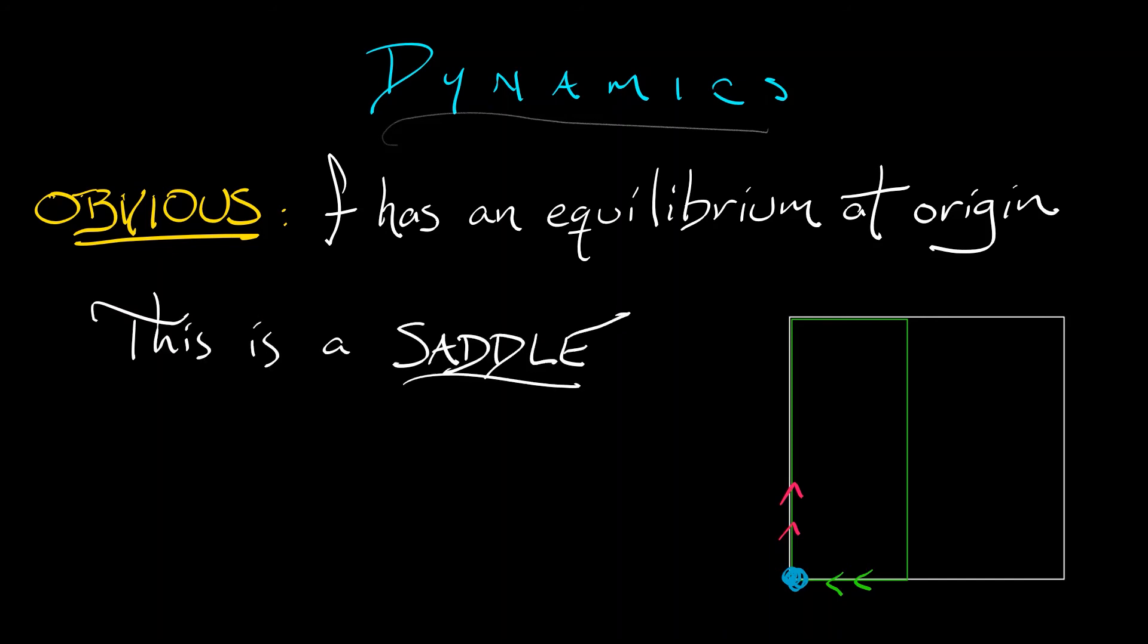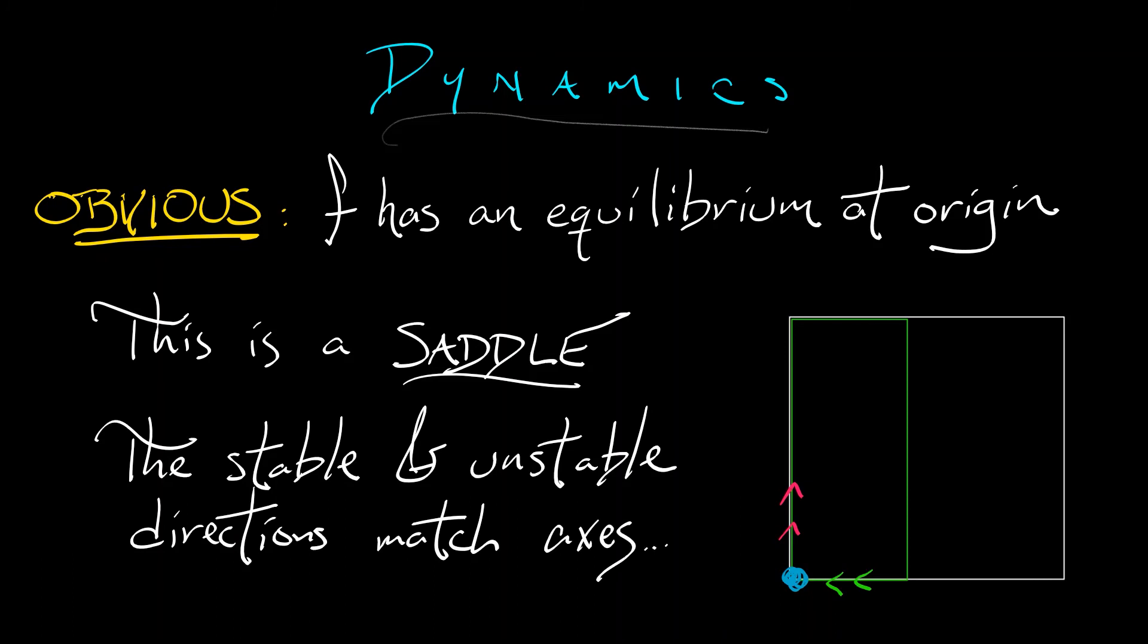And the stable and the unstable eigenspaces, in fact, the stable and the unstable manifolds to that saddle match with the x and y axes. The x-axis is the stable direction, and the y-axis is the unstable direction. Now that one is obvious.